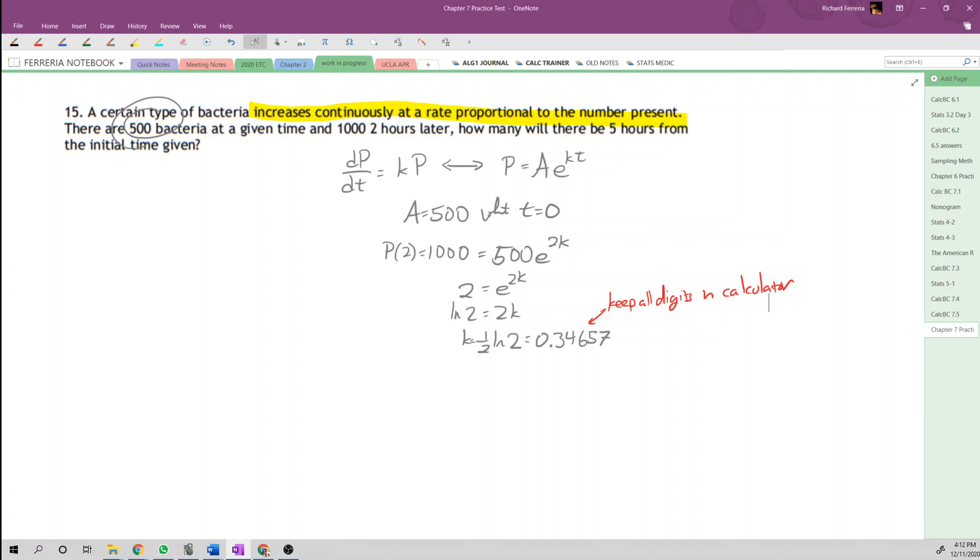That's 0.34657. Just a reminder: since we're dealing with an exponential model, the value of k is very sensitive. Try to keep as many digits as you can in your calculator. If you have a TI-84 like I do, it's really easy to copy and paste that number where you need it.